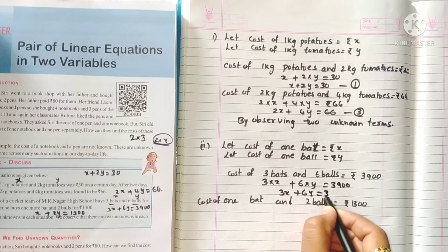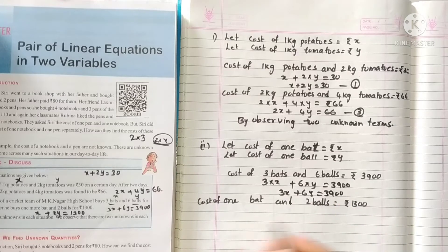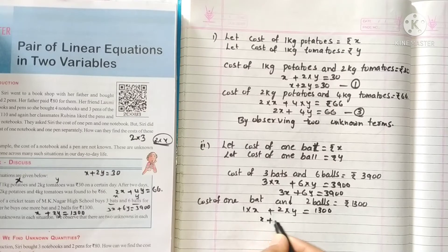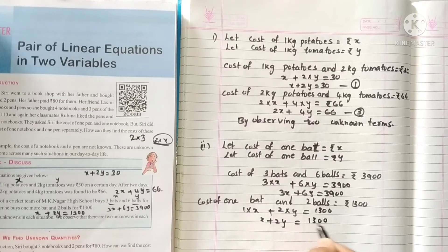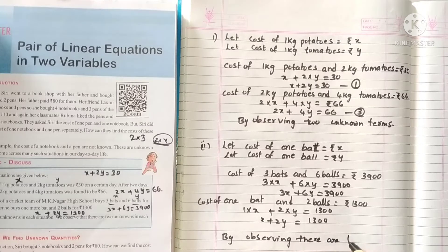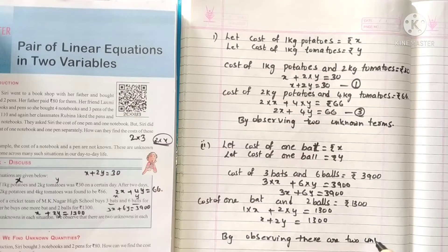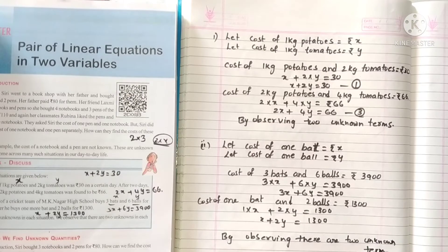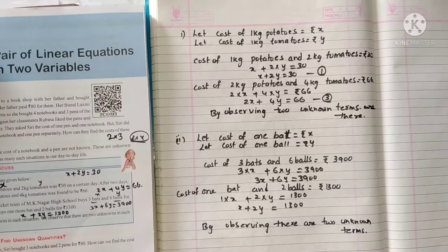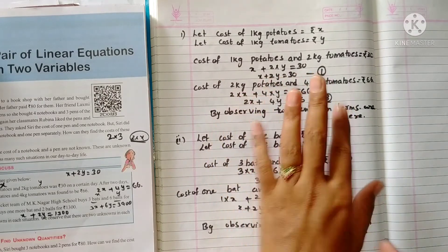Cost of three bats and six balls: 3x plus 6y is equal to 3900. Similarly, one bat plus two balls: x plus 2y is equal to 1300. Here also there are two unknown terms. So like this we can form a linear equation by using the given information.